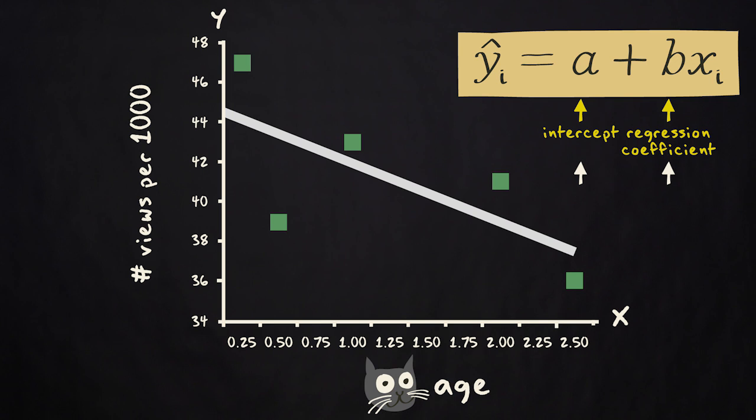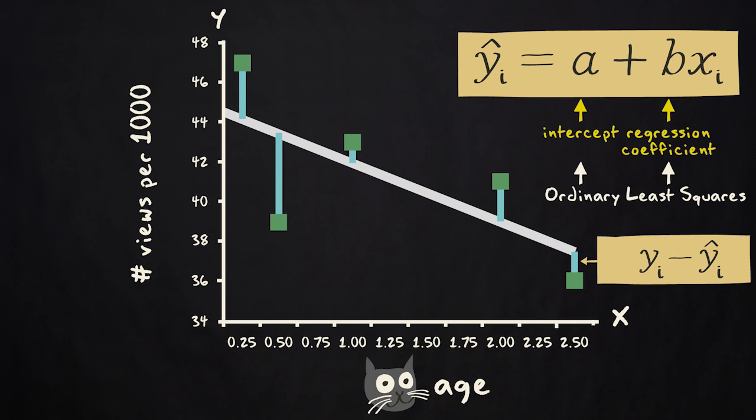In order to find these values, we use the method of ordinary least squares. We take the residuals, y sub i minus y hat sub i. We square these residuals and we add them up. We square because otherwise the positive residuals, where the observations lie above the line, will cancel out the negative residuals, where the observations lie below the line.